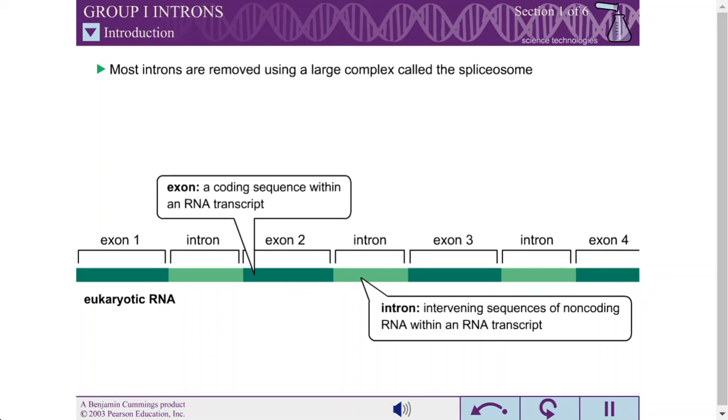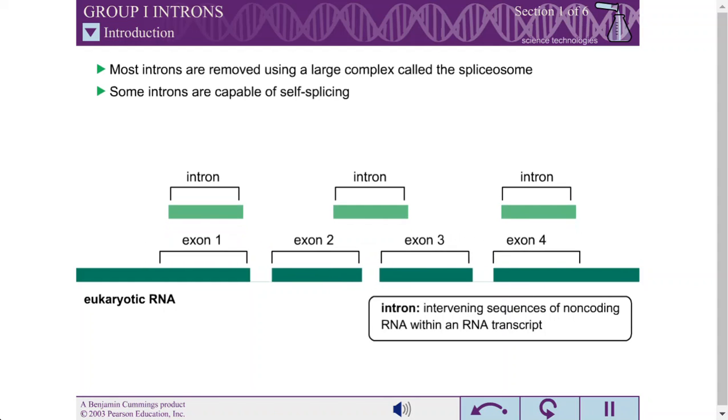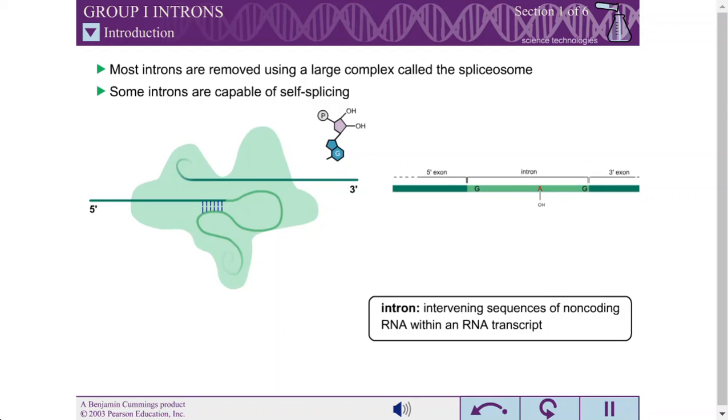While most introns are removed using a large complex called the spliceosome, some introns are capable of catalyzing the chemistry of their own release. These self-splicing introns are divided into two classes based on their mechanism of self-splicing: Group 1 introns and Group 2 introns.